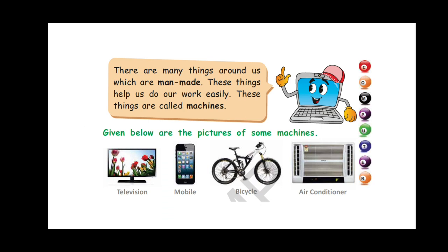But, the things like television, mobile, bicycle, air conditioner are made by man. And, these things help us do our work easily. So, these things are called machines.